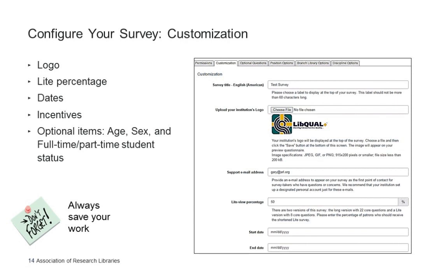If you choose to award incentive prizes, your questionnaire will include a box where respondents can optionally enter their email addresses. You can also select optional demographic items in this tab. It's important to note that while these demographic items are optional to include on your survey questionnaire, if you do decide to include them, they are required items for your respondents.